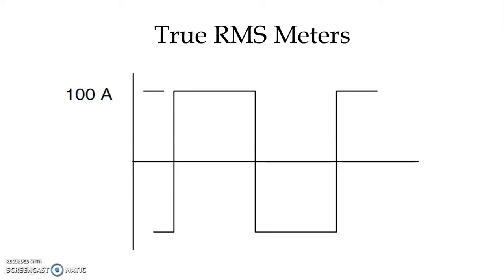Similarly, considering the ratio between RMS value and peak value of a pure sinusoidal waveform, a peak value reading meter will measure 100 amperes and multiply by 0.707, indicating an RMS value of 70.7 amperes.